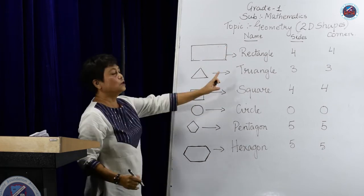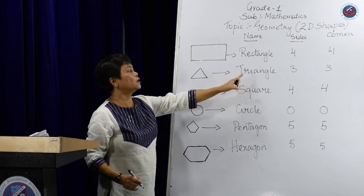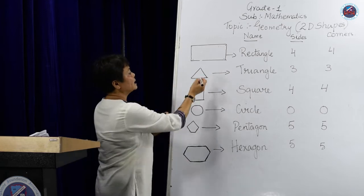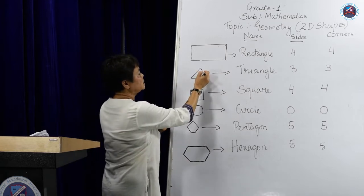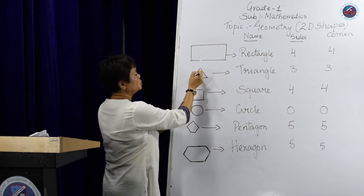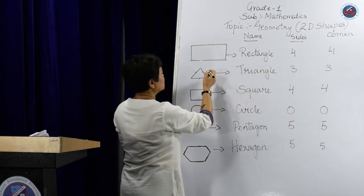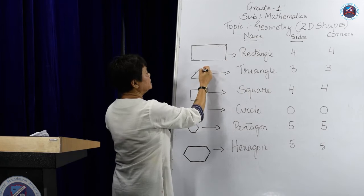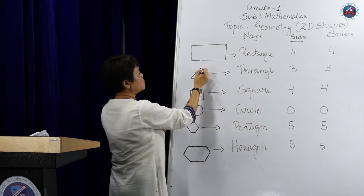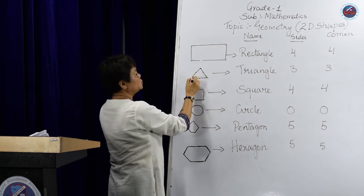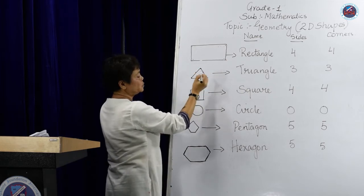Now, triangle. Triangle has got three sides — that is one, two, three — and three corners. These are the corners: one, two and three.